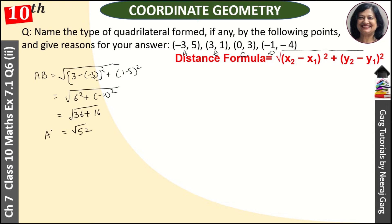This is our AB. Now we will find BC. For BC we will take B and C's coordinates. So this becomes (0 minus 3) whole square plus (3 minus 1) whole square. So this is (-3) whole square plus 2 square. So 9 plus 4, that is root 13.